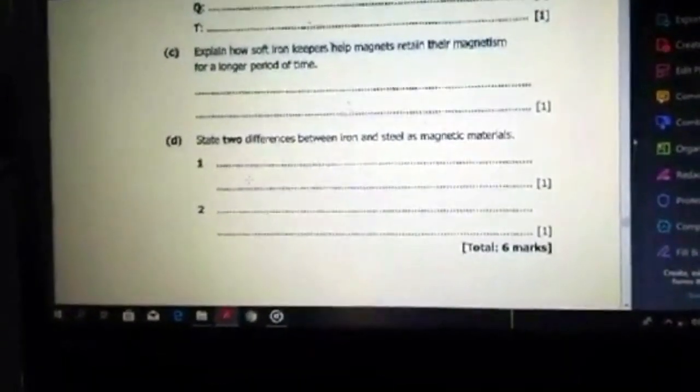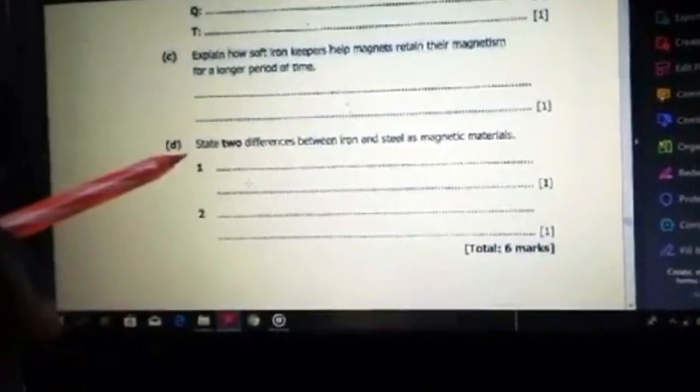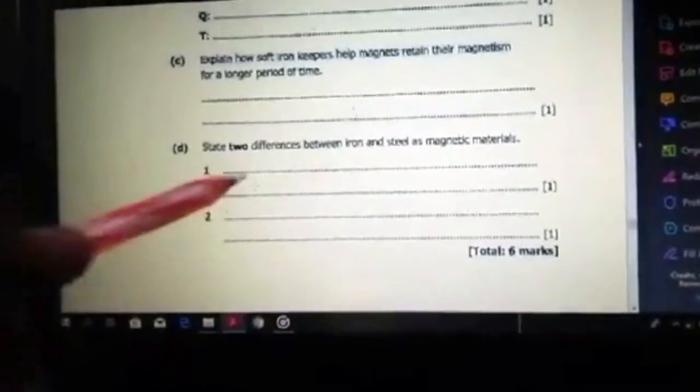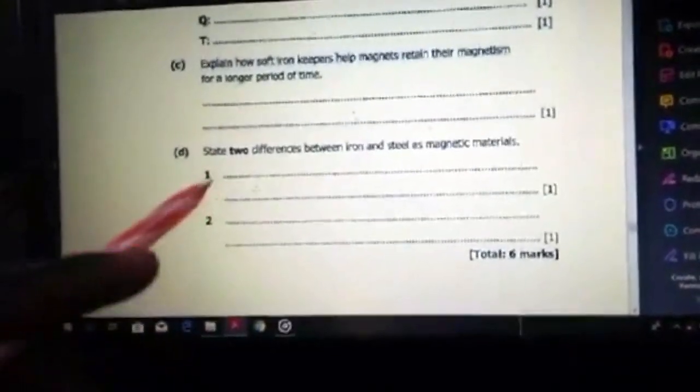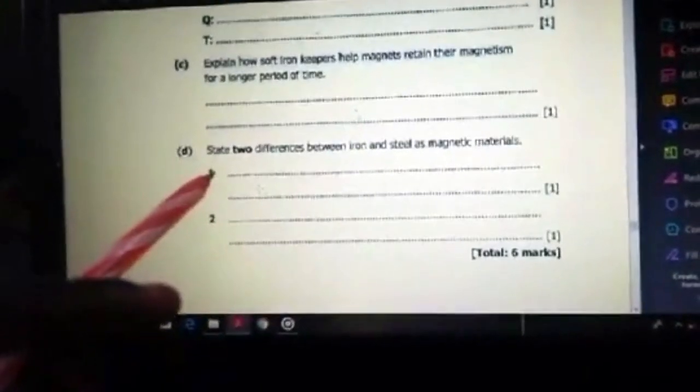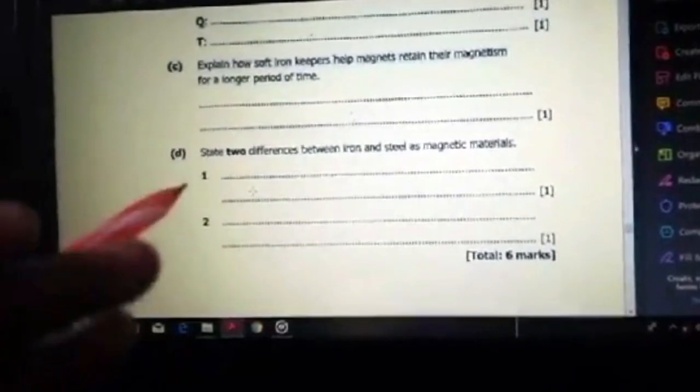State two differences between iron and steel as magnetic materials. One difference is that iron takes a short time to be magnetized while steel takes a long time to be magnetized. Steel retains its magnetism for a long time while iron is demagnetized after a very short period of time.